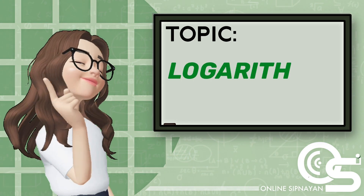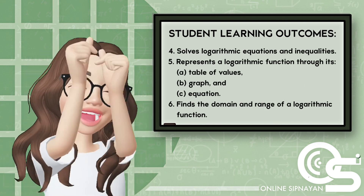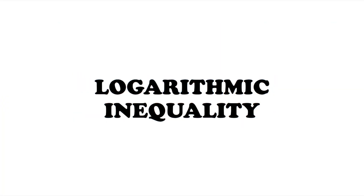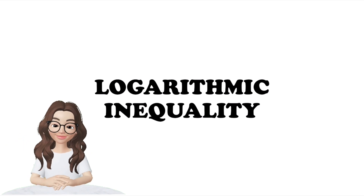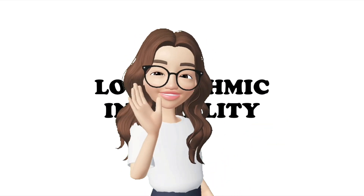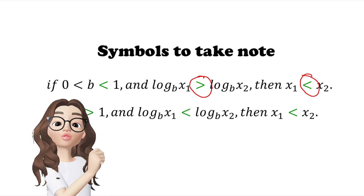If the logarithm of x₁ with base b is greater than the logarithm of x₂ with base b, then x₁ is less than x₂. If the value of b is between 0 and 1, then the inequality symbol will reverse — so greater than becomes less than.